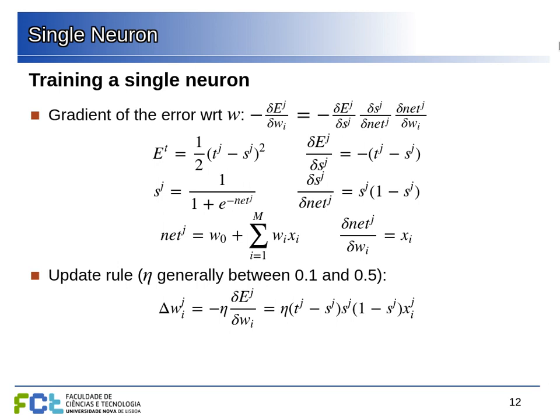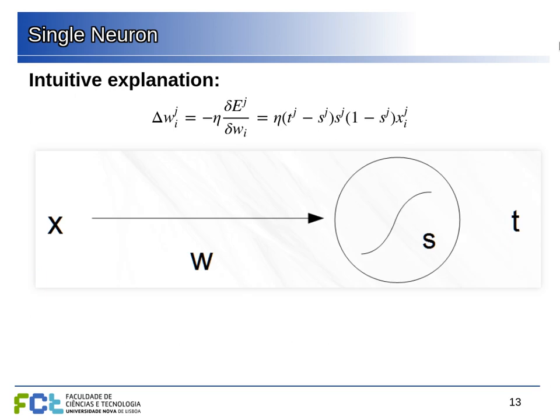When we multiply all these derivatives together we get the learning function: the derivative of the error, times the derivative of the sigmoid function, times the corresponding input. Multiplying by a small learning rate eta, we take a small step in the direction of descending the error surface, improving the error of our neuron a little. The intuition is: compute the difference between the output and the target, times the derivative along the sigmoid function, times the derivative with respect to the weight being adjusted.